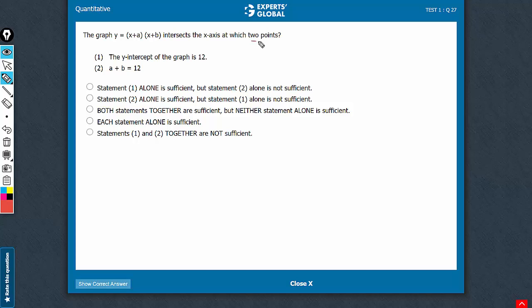We need to figure out the two points at which this graph intersects the x-axis. Intersection at x-axis means that y would be equal to 0. So if we put y equals 0 in this equation,